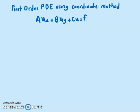For this video, I'm going to show you how to solve using the coordinate method. There are a few steps. The first step is to introduce the coordinate transformation: Psi equals A·X plus B·Y, and eta equals B·X minus A·Y.